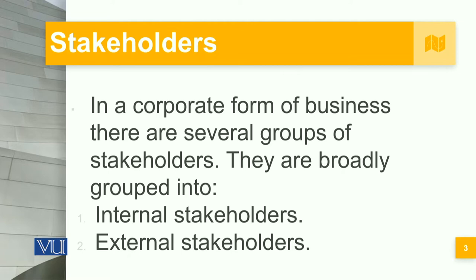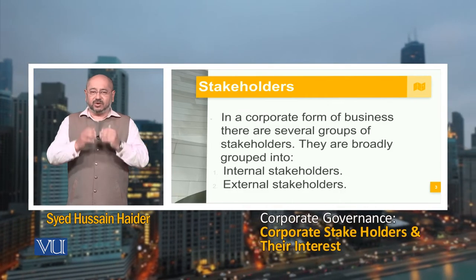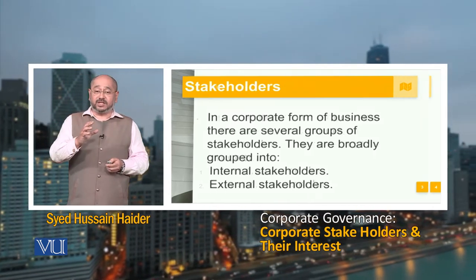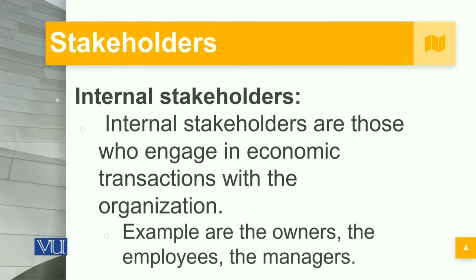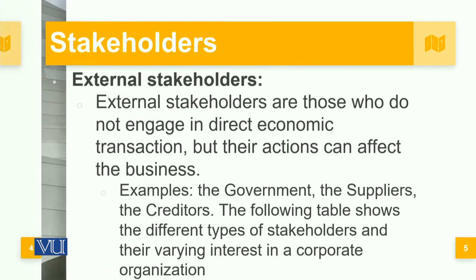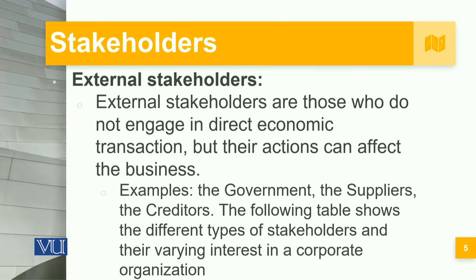To identify stakeholders and comprehend how they interface with the organization is extremely important. Primarily and broadly speaking, stakeholders are internal or external. Internal stakeholders are those who engage in economic transactions with the organization — for example, the owners, employees, and managers. External stakeholders are those who do not engage in direct economic transactions, but whose actions can affect the business — examples include the government, suppliers, and creditors.